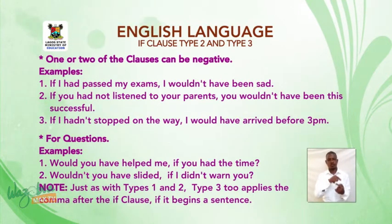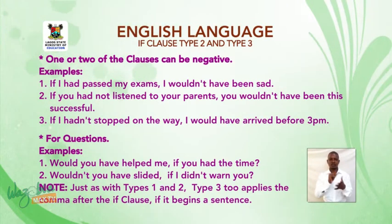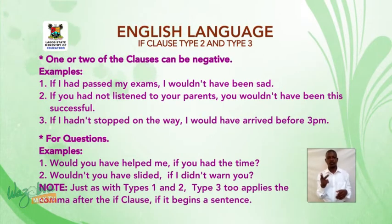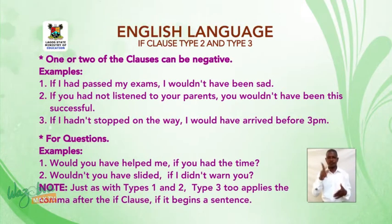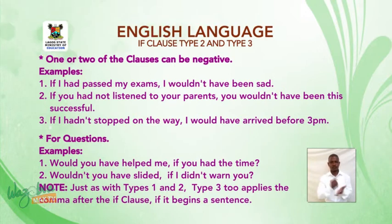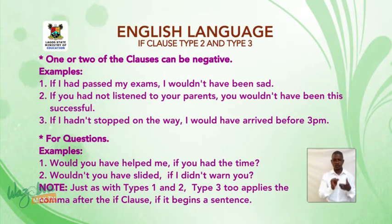Thirdly, one or two of the clauses can be negative. Examples: One, if I had passed my exams, I wouldn't have been sad. Two, if you had not listened to your parents, you wouldn't have been this successful. Three, if I hadn't stopped on the way, I would have arrived before 3 p.m. For questions: One, would you have helped me if you had the time? Two, wouldn't you have slided if I didn't warn you?